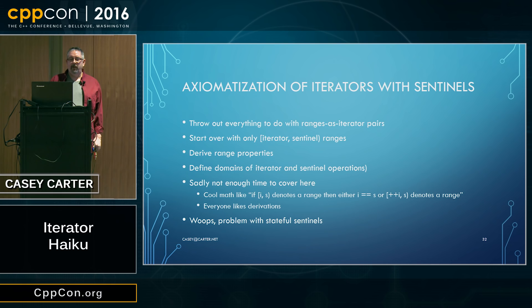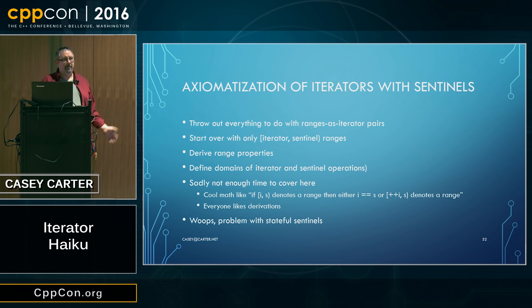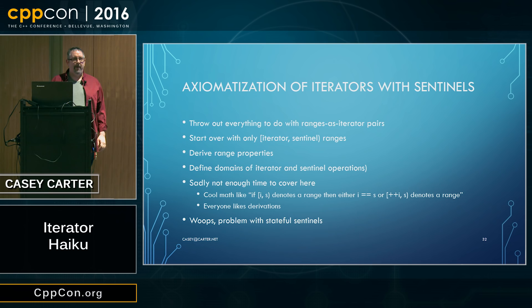We had told people these things have to exist, but we hadn't really made it clear when you could use them. Sadly, I'm not going to cover the entire axiomatization here — I know you would all enjoy several hours of mathematical derivations, but we don't have time. There are lots of cool things in there, like: if i and s denote a range, then either i equals s, or ++i and s denote a range as well. Unfortunately, I ran into a problem with stateful sentinels when I was doing this.